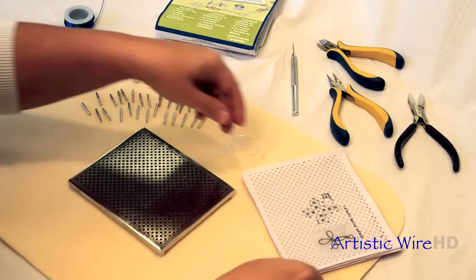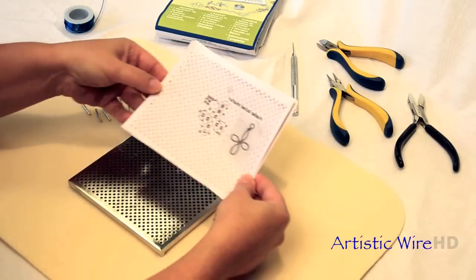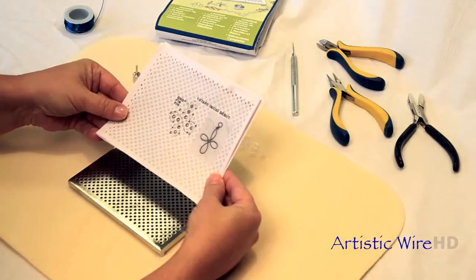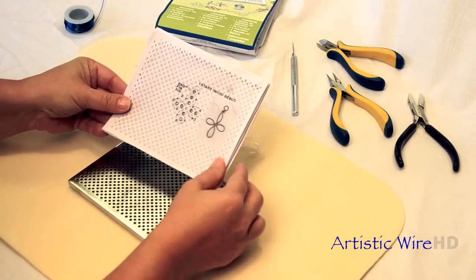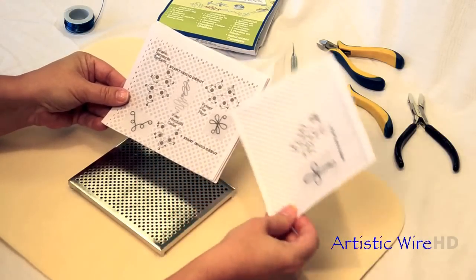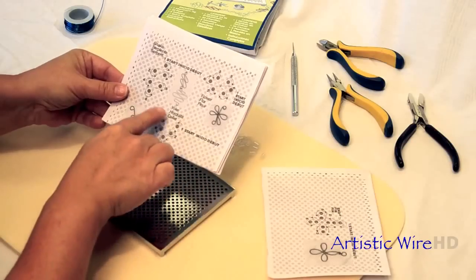We always like to include instructions and patterns. This particular kit is coming with six different patterns, so you're going to be able to make really fun loop shapes.